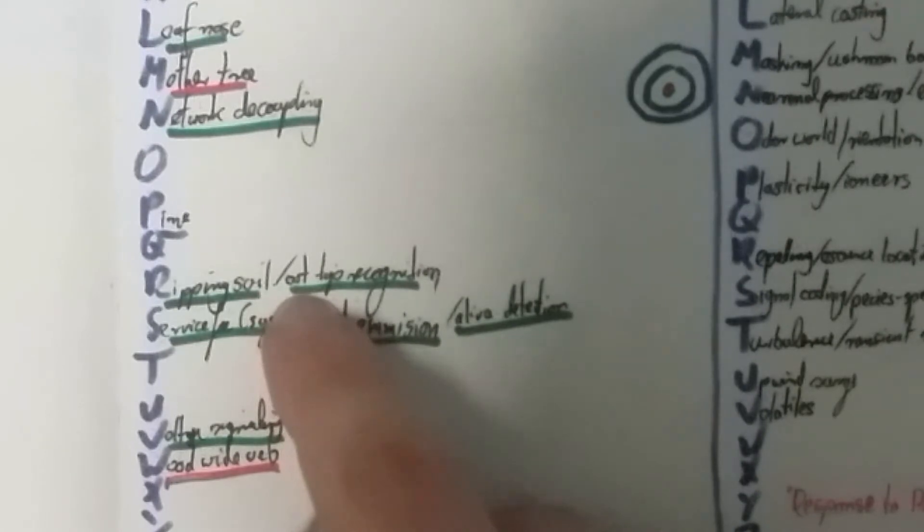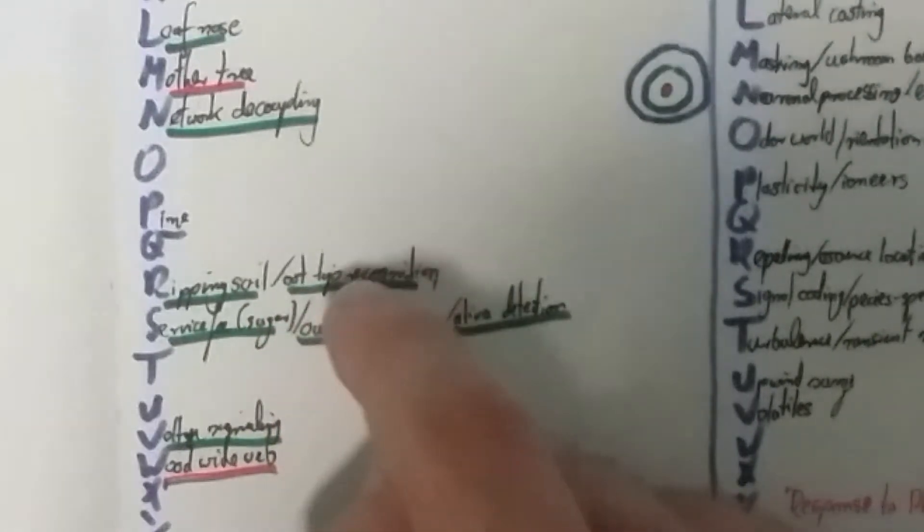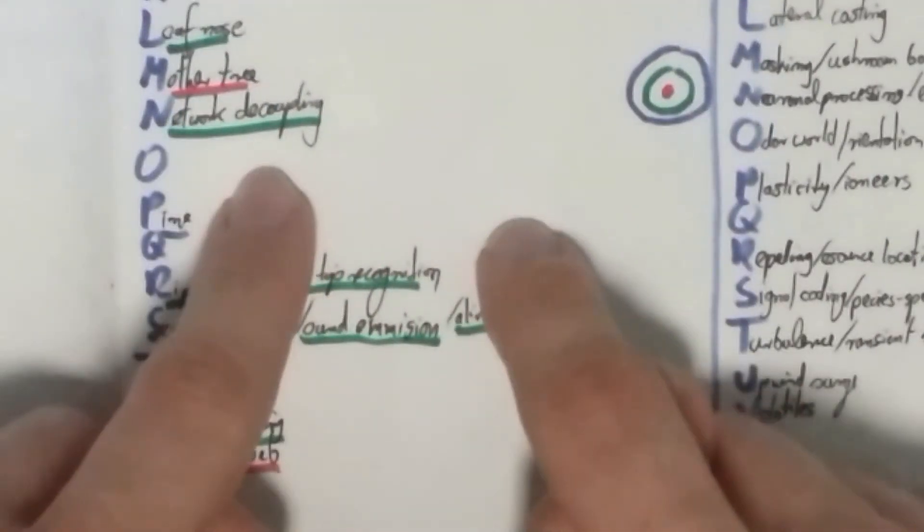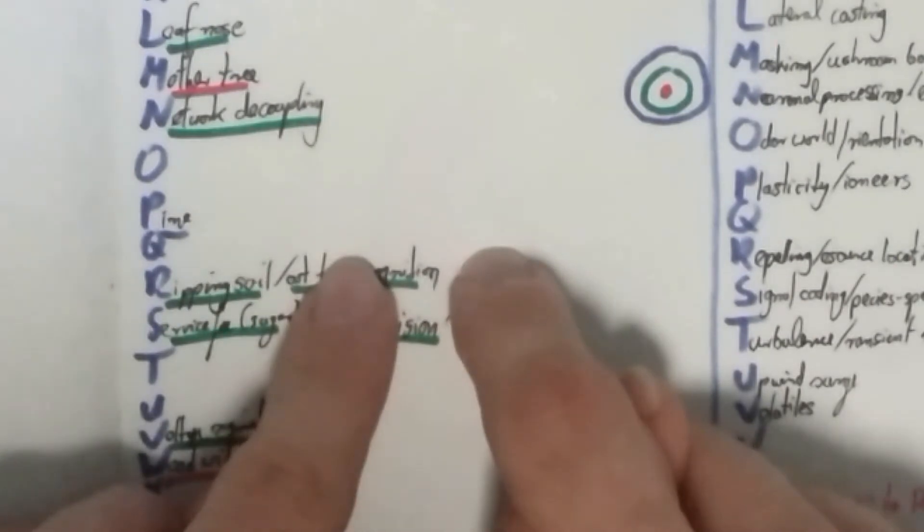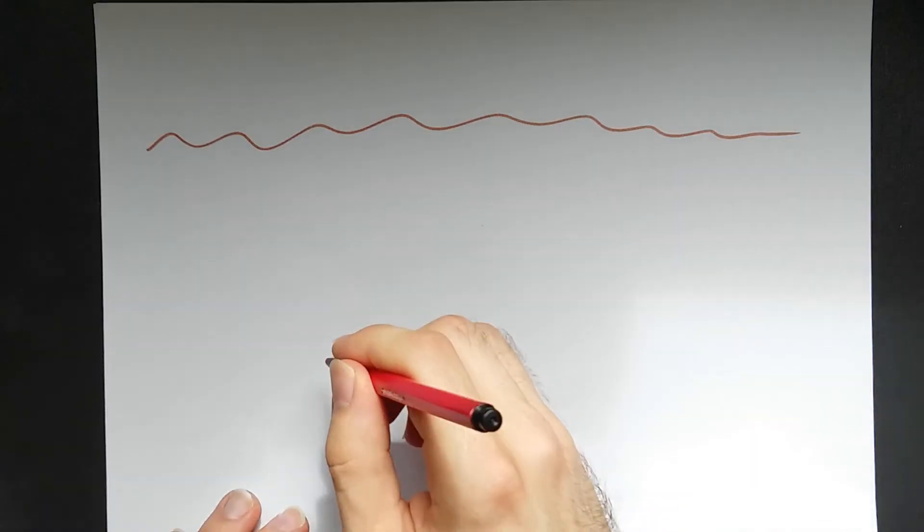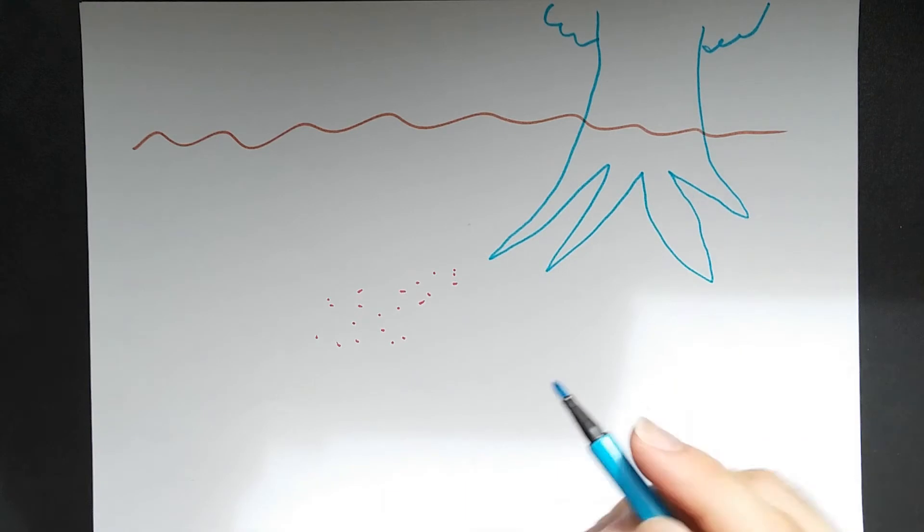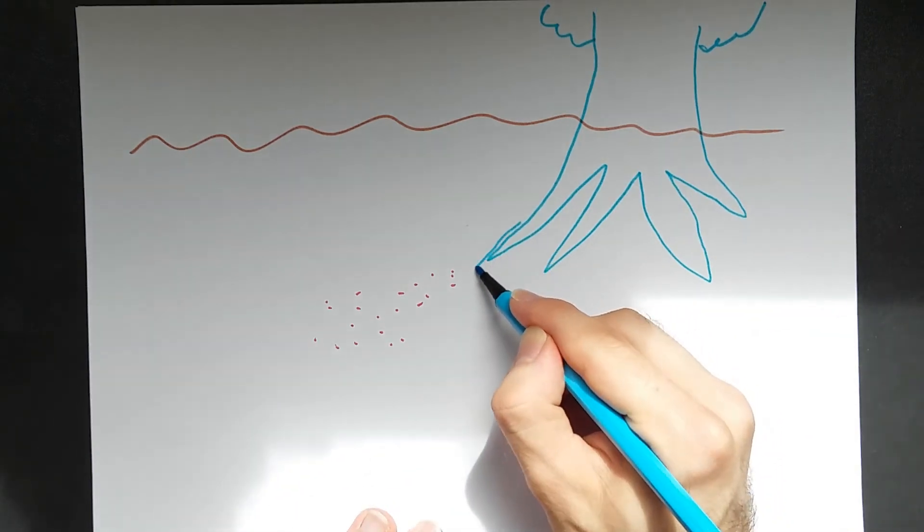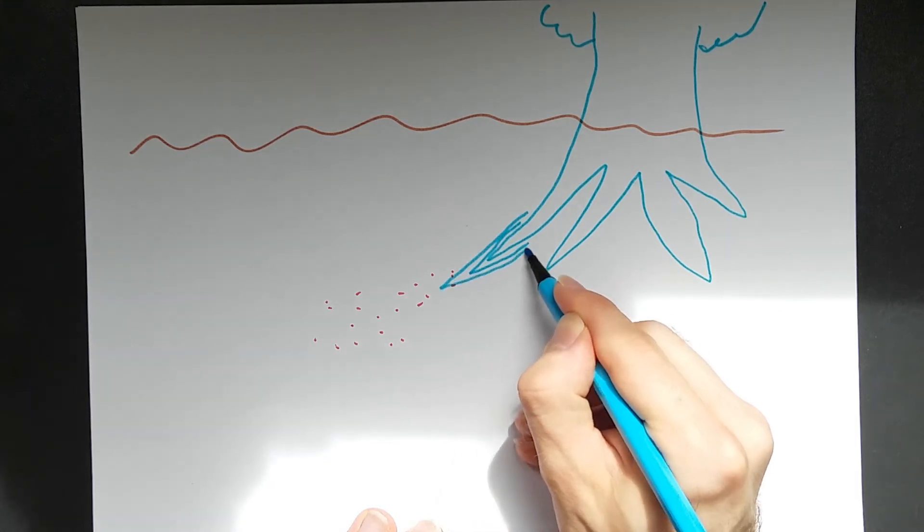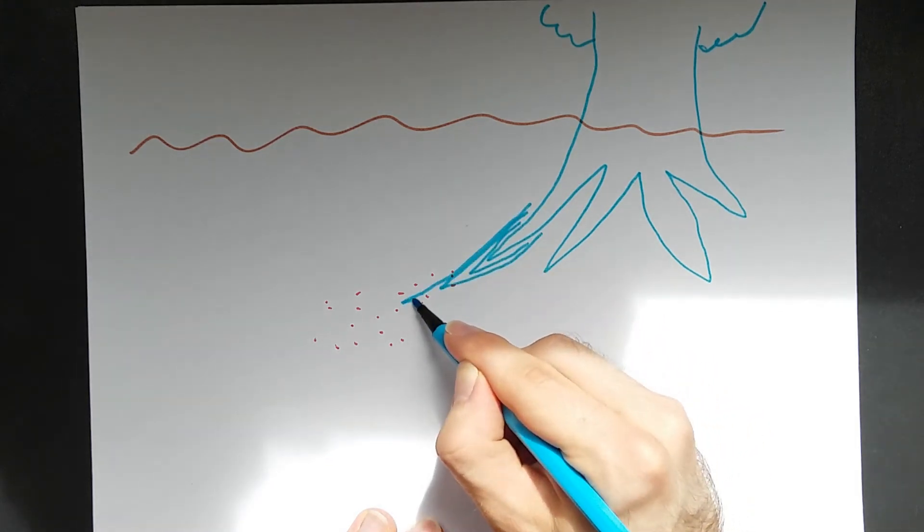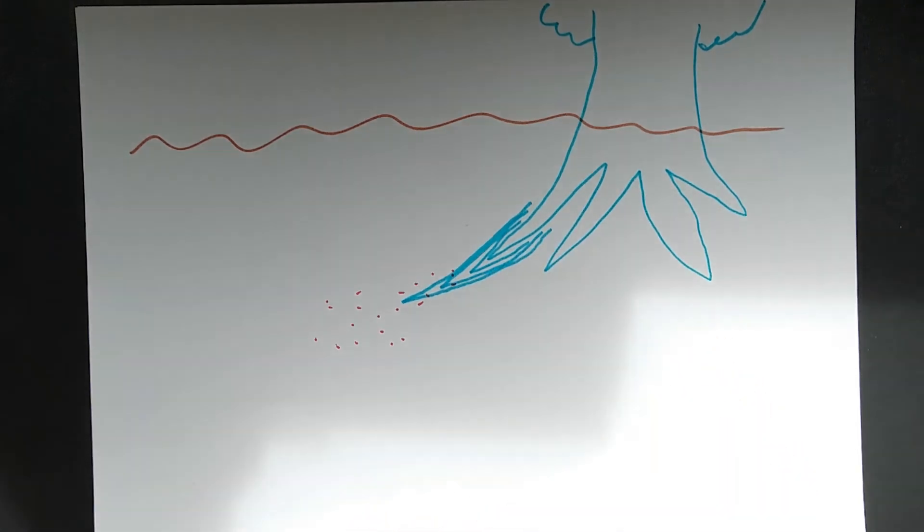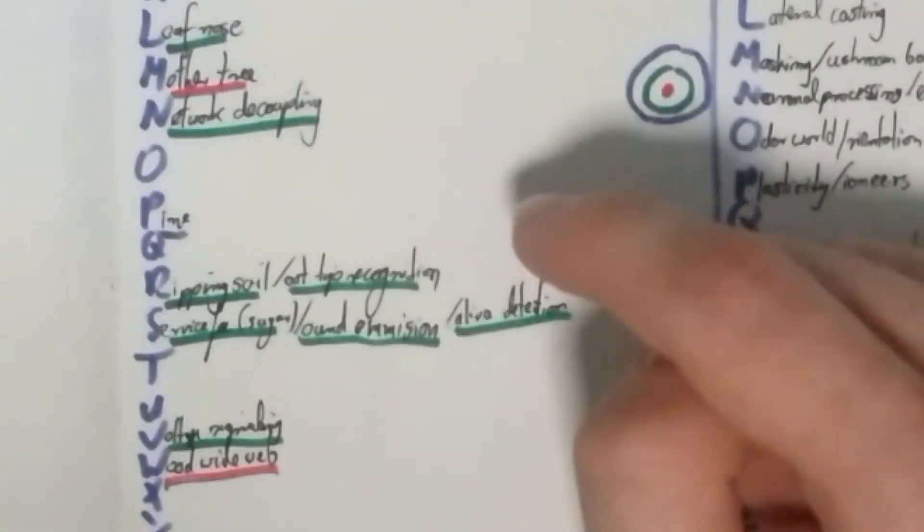Then we have this one here. It's called root tip recognition. This has something to do with the fungal network. I think it has something to do with that the roots, the tips of the roots, they also act as sensors similar to the leaves. They can also recognize certain chemicals. And so the roots, they grow in a certain direction. If there is a certain chemical in this part of the soil, they will grow preferentially into this rich, abundant source of minerals, of nutrients. So the root tips can recognize things, which is really cool.